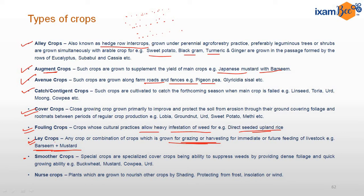Smother crops are special crops grown to suppress weeds — they grow fast and tall with dense foliage, suppressing weeds due to their quick-growing ability. Examples are buckwheat, mustard, and cowpea. Nurse crops nourish other crops by providing proper shade and environment to grow.